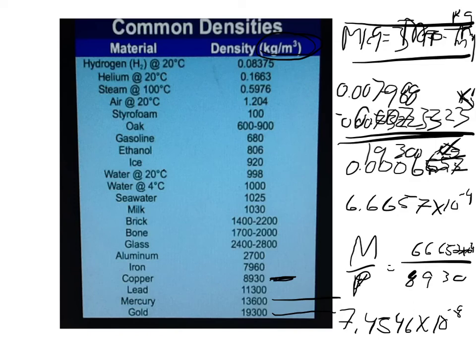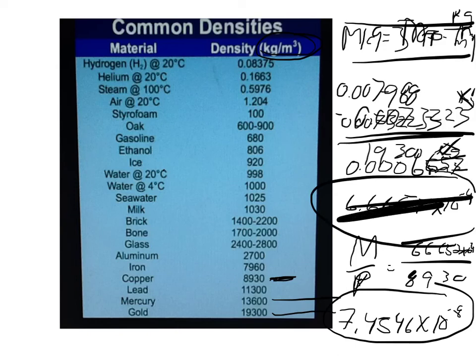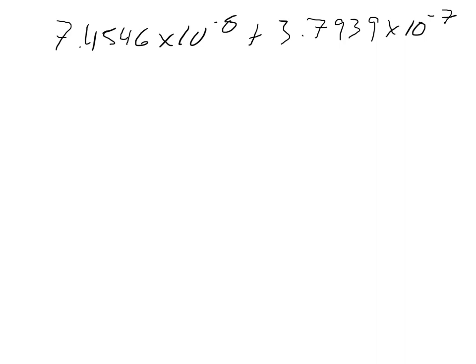And now the last thing it asks for is to calculate the density of the whole coin. And so we actually know the mass of the whole coin. It gives it in the question, it says it's 7.988 grams. But to find the density, it's mass over volume. So we have to add our two volumes together. So this volume plus this volume. So it's the 7.4546 times 10 to the 8th plus the 3.7939 times 10 to the negative 7th. So when you add those together, you'll get 4.5394 times 10 to the negative 7th. And so that is the total volume.